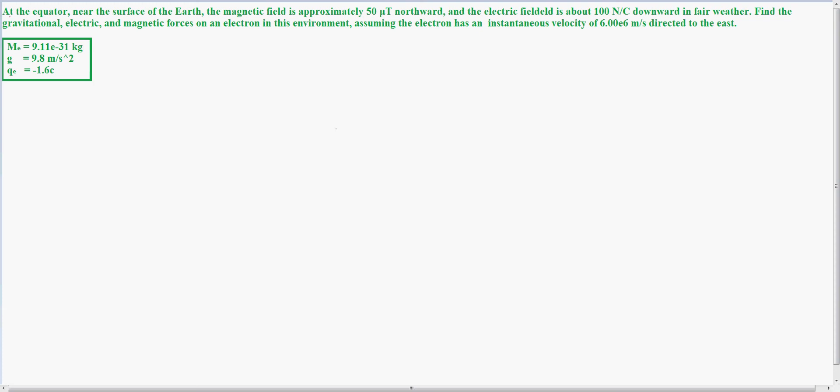Hello, this is my solution to the problem that at the equator near the surface of Earth, the magnetic field is approximately 50 micro teslas northward, and the electric field is about 100 newtons per coulomb downwards in fair weather.